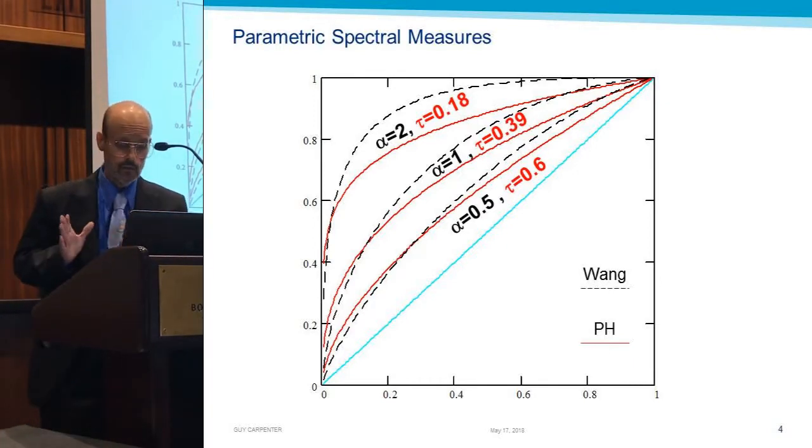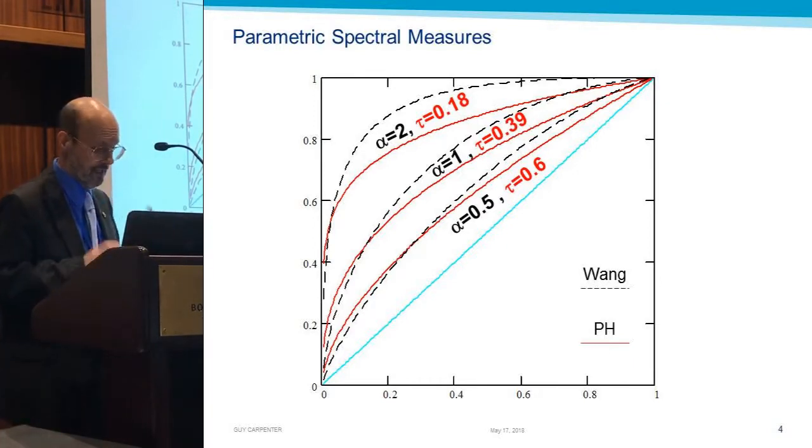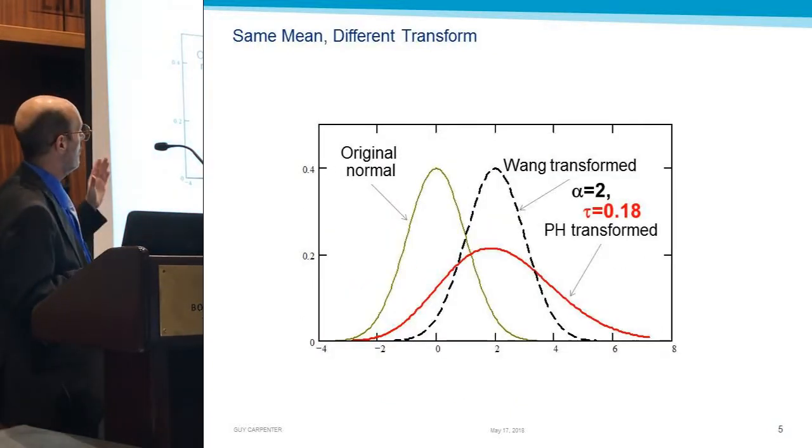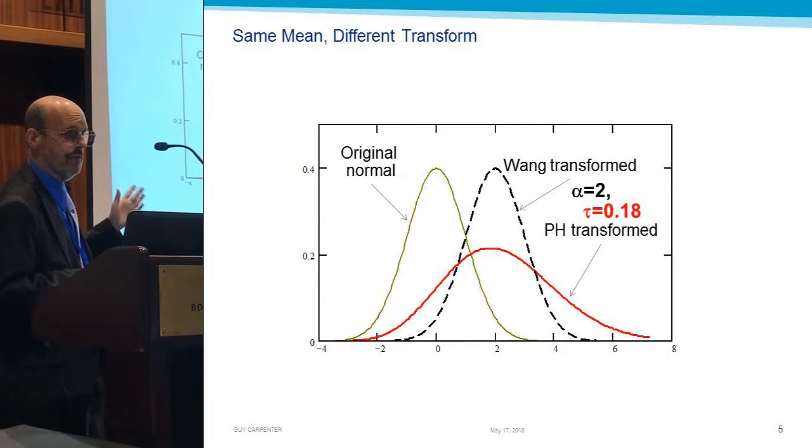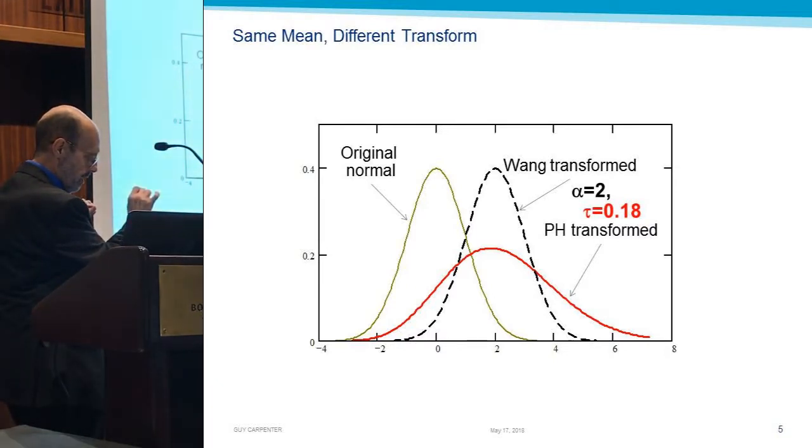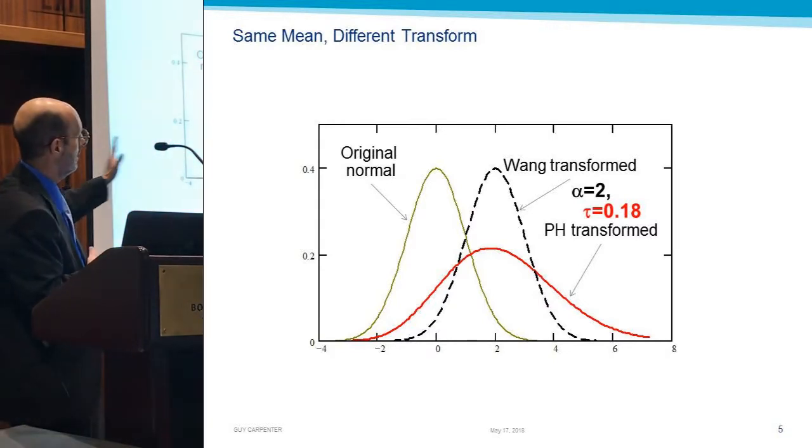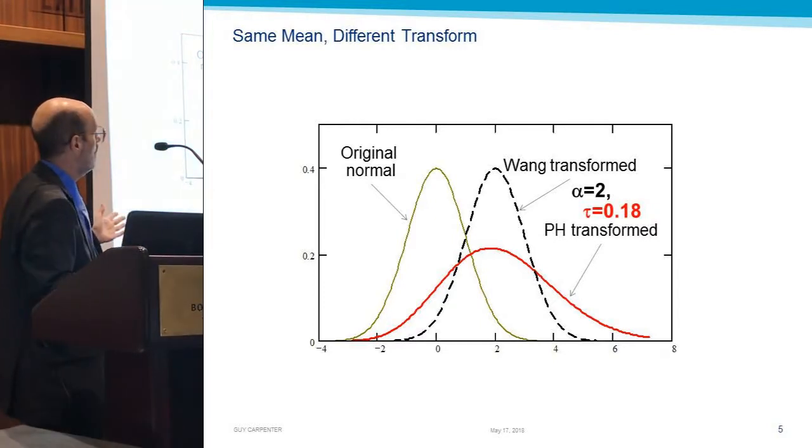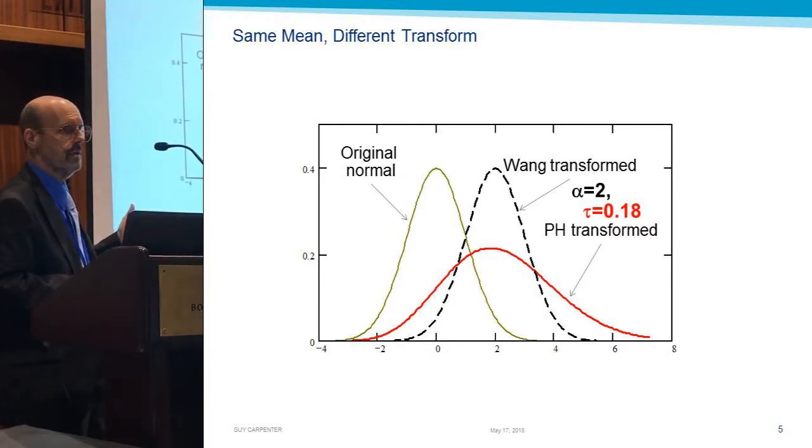And although I know Steve is allergic to PDFs, I still want to show you because I think it's the best way to understand what's really going on here. If we started with our original normal distribution in brown there, it has a zero mean. Then what a Wang transform with an alpha of two would do to it, the dotted black line is just a heavy shift over by two units. But the proportional hazards transform, giving you the same mean shift, is not giving you at all the same distribution. It's a little skewed, and it's got a higher standard deviation to it.